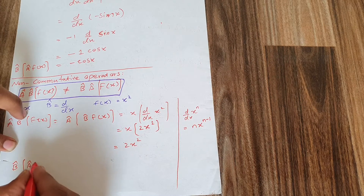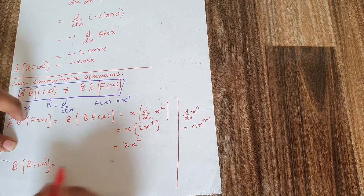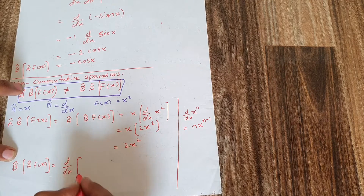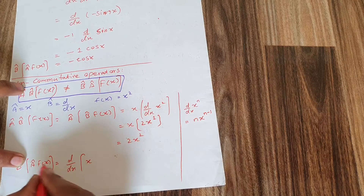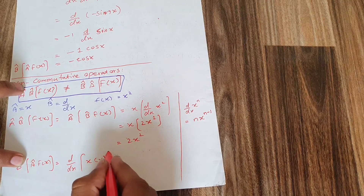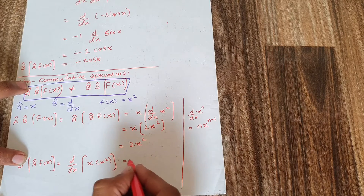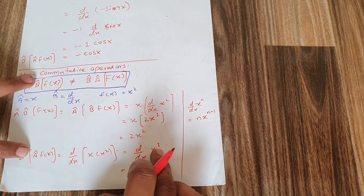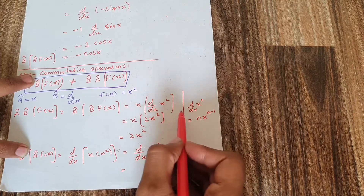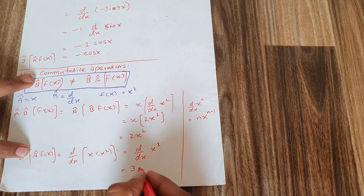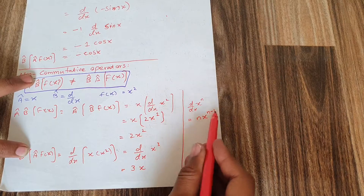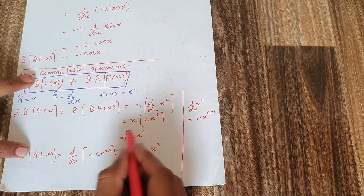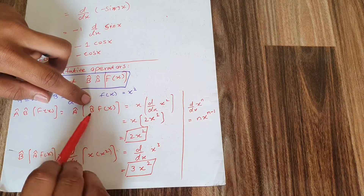Now changing the order: applying A first and then B. Writing B·A·f(x): d/dx acting on x times x², which is x³. The derivative of x³ using the power rule brings the 3 in front, and subtracting 1 from the power gives 3x². The answer is 3x², whereas before it was 2x².